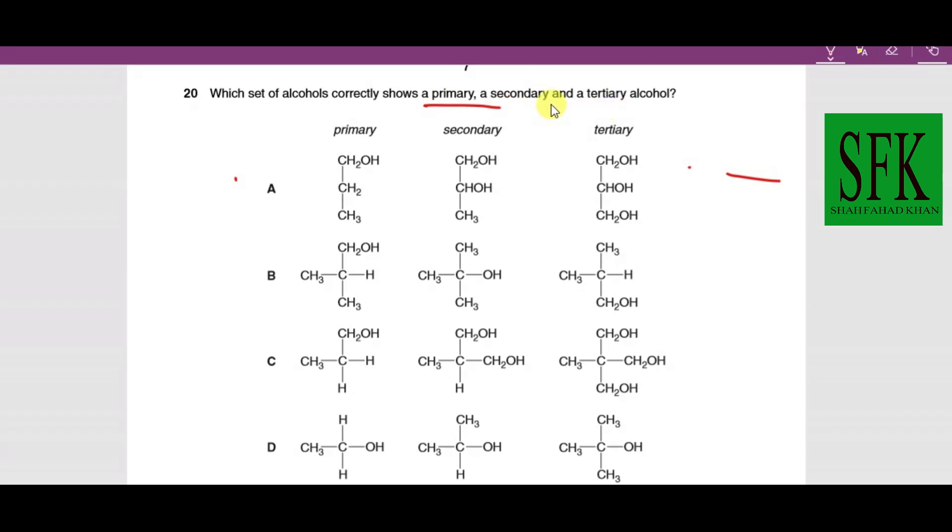Last MCQ of this video: which set of alcohols correctly shows primary, secondary, and tertiary alcohols? To identify them—primary is when the carbon to which the OH is bonded is directly bonded to one other carbon and two hydrogens. If you look at option D, this is primary. All of the first alcohols are primary.